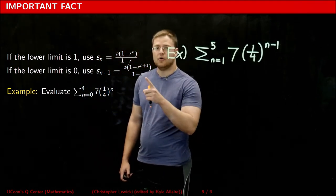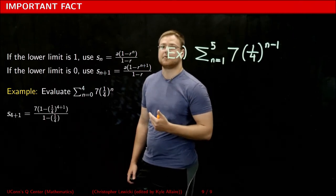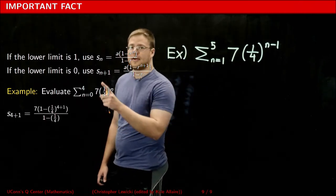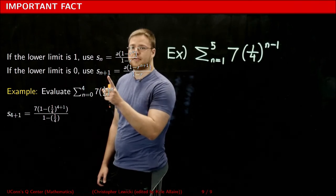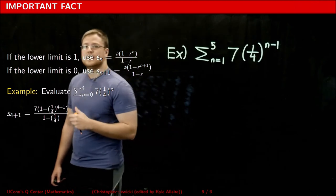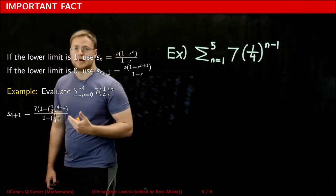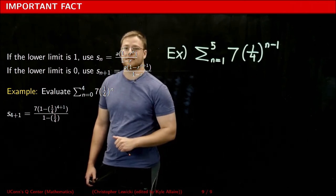If I was to use this version of the partial sum formula, we're still going to get the same result, because notice, having the plus one in the subscript, as well as having it in the exponent here, is what's going to allow me to get a five here, therefore representing the sum of the first five terms of the sequence.